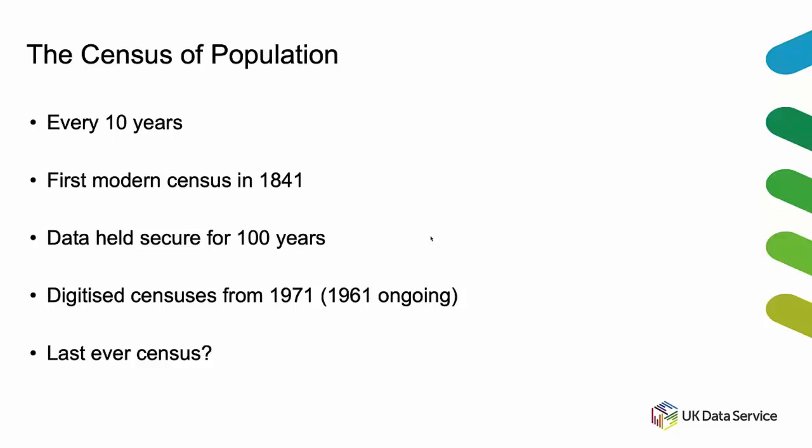The next census, they say, will be the last ever full census - although they said that about the 2011 census as well, so we'll see. They want to go to a system of using administrative data plus some sample surveys. However, this is just a personal opinion: I don't think we are good enough at holding administrative data in this country to enable that. Some countries do this - the Dutch don't have a traditional census. One reason for that is that the Nazis used the census data in the Second World War to identify Jewish people, so there was a lot of reaction to that and people weren't forthcoming with answers. Thankfully, we don't have that issue in this country.